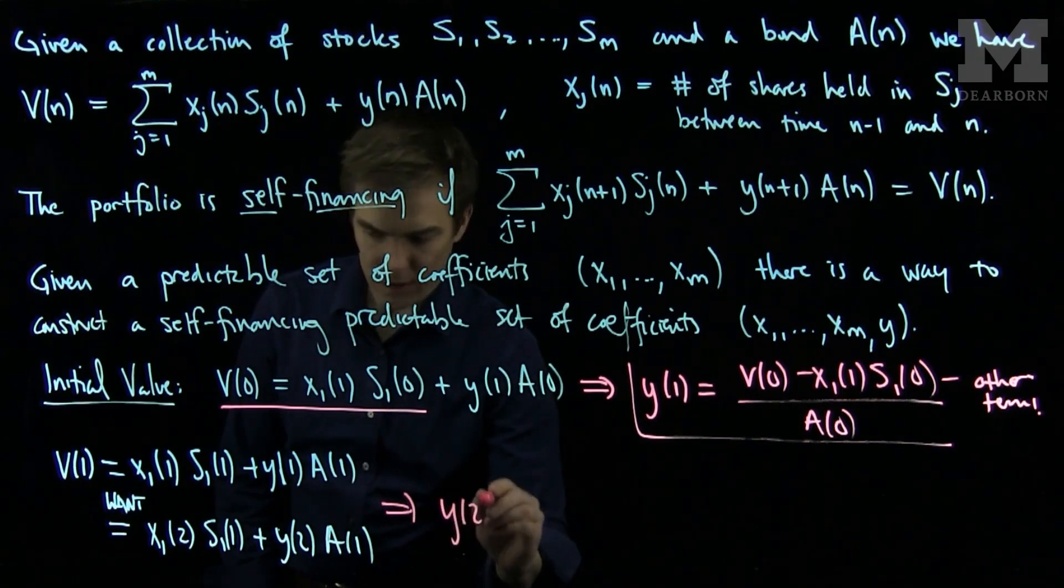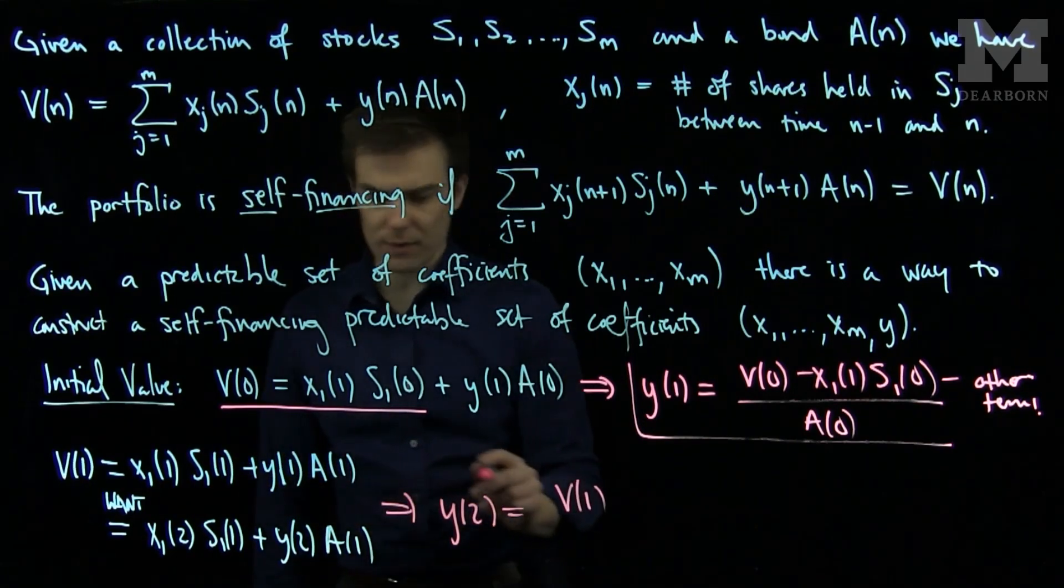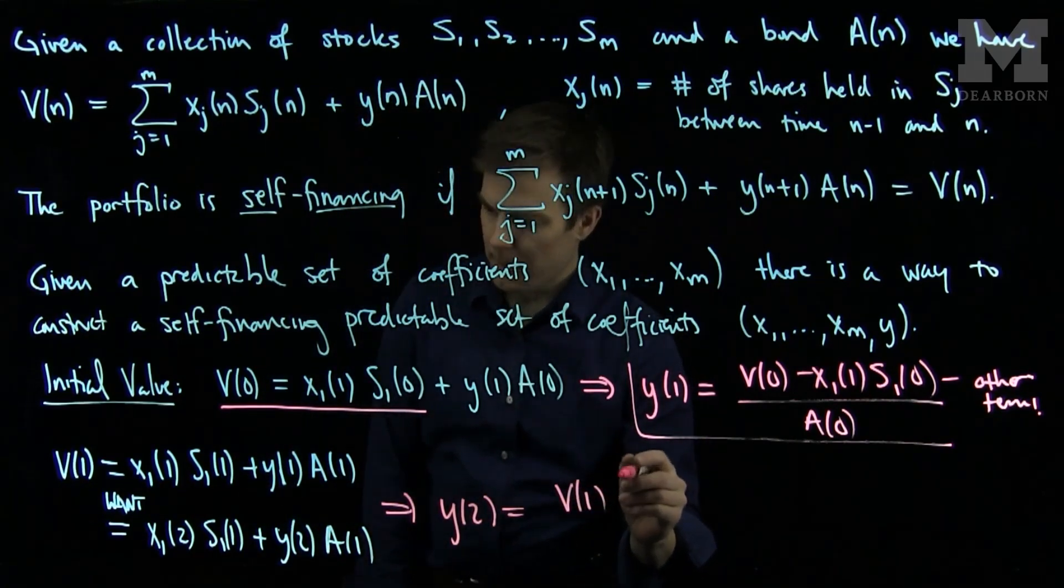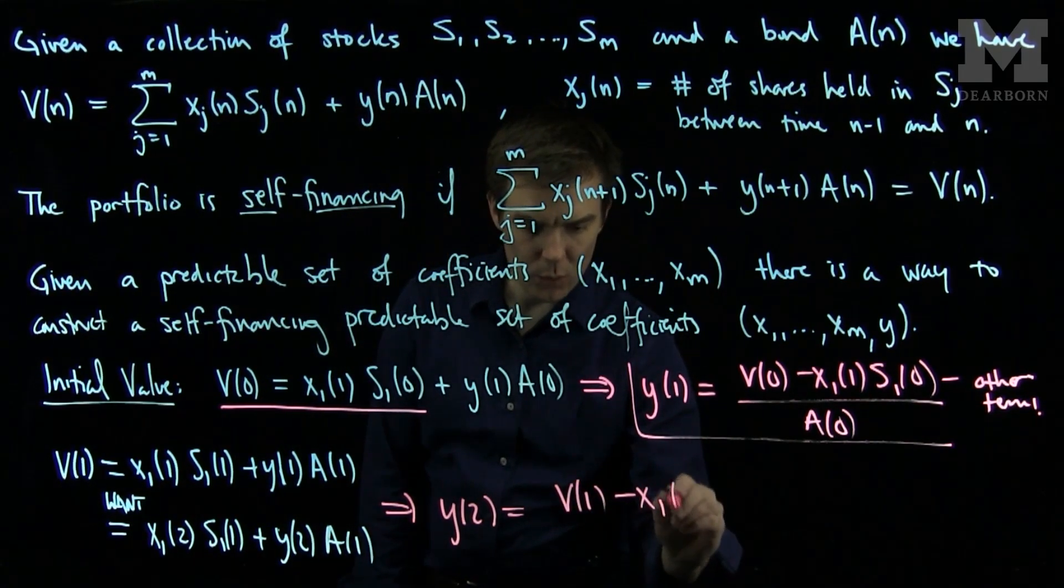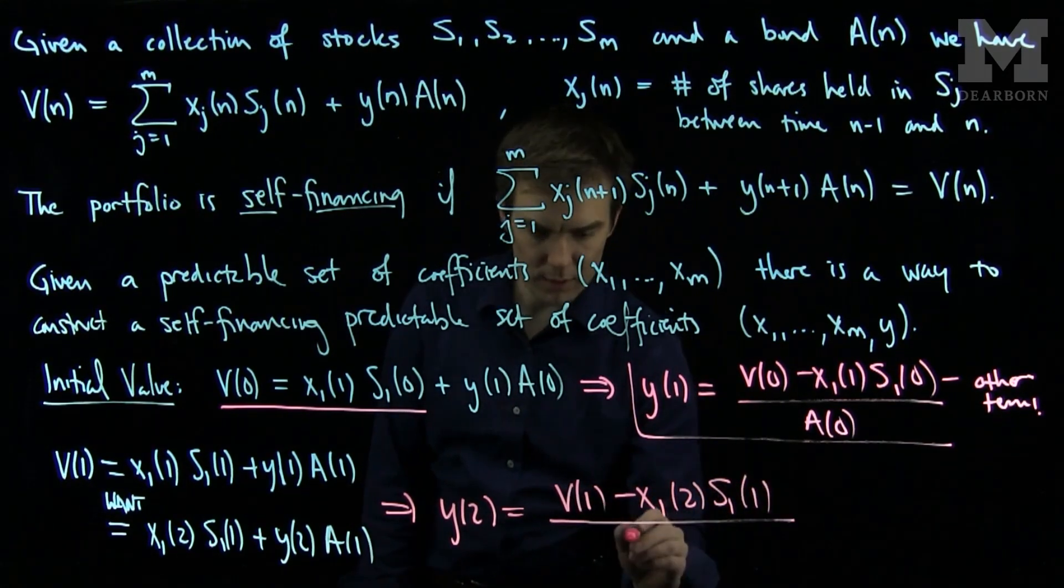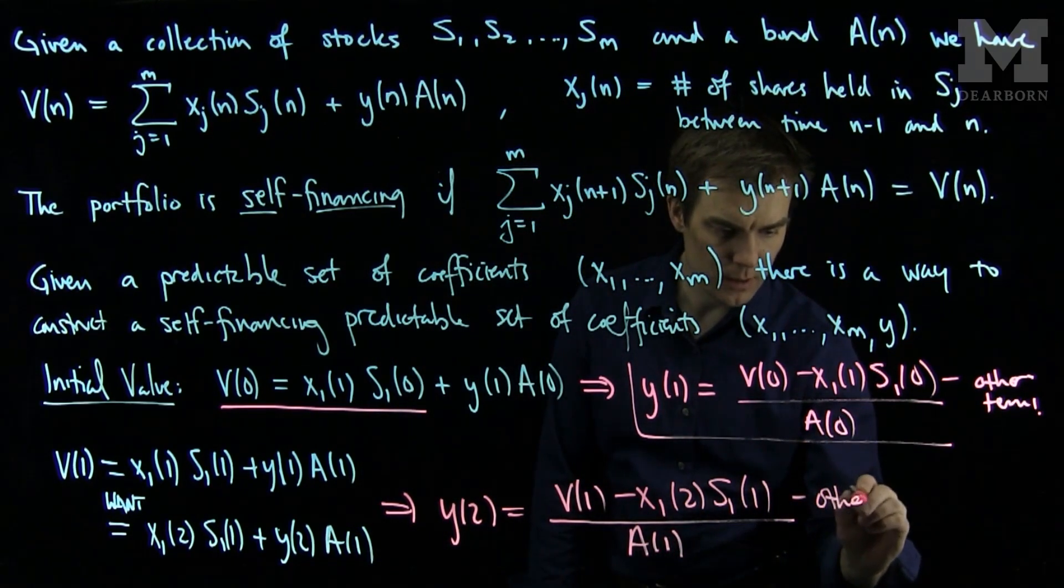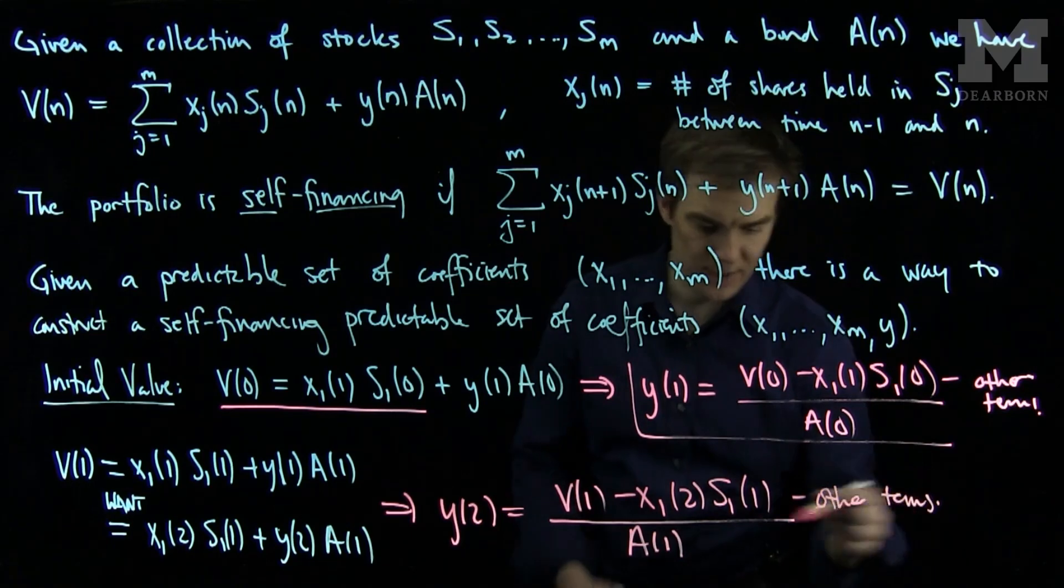This will tell me that Y2 will be V(1), which we can now find since we have these things deterministically, minus X1(2) S1(1) over A(1), and again minus the other terms if there are more stocks in the portfolio.